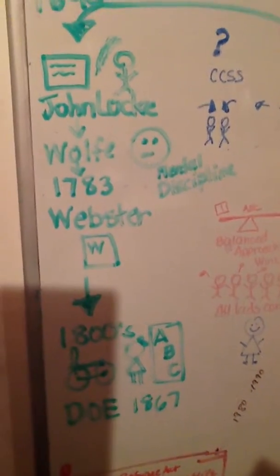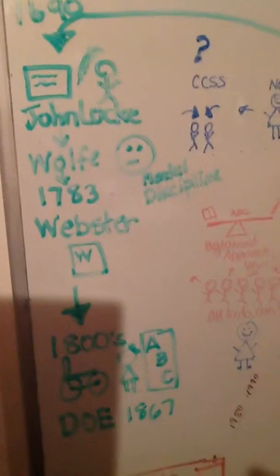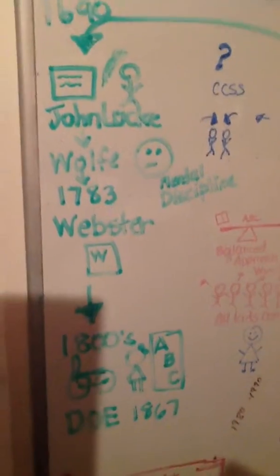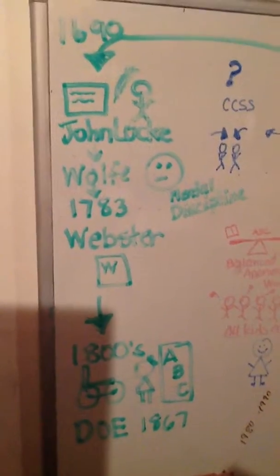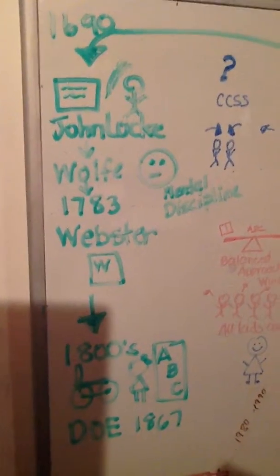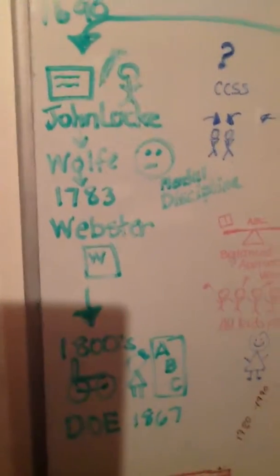In 1783 we had Webster. He was dissatisfied with the English text and wrote three volumes called A Grammatical Institute of English. One was spelling, one was grammar, and one was reading. The spelling one is still in print.